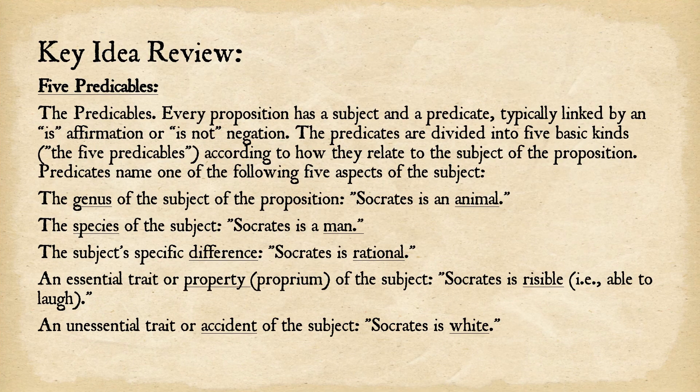Key idea review of the five predicables: every proposition has a subject and a predicate, typically linked by 'is' — affirmation — or 'is not' — negation. These are divided into five basic kinds, the five predicables: genus, species, difference, property, and accident.